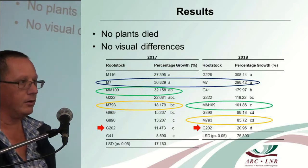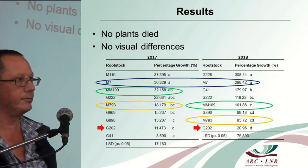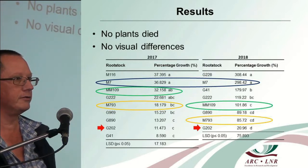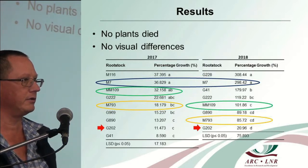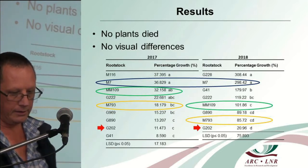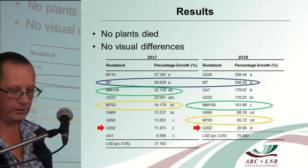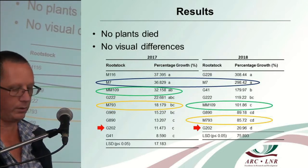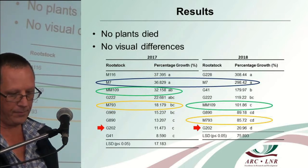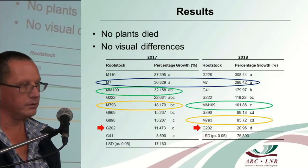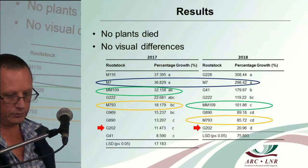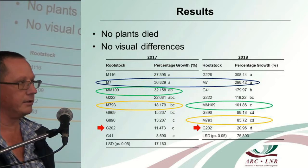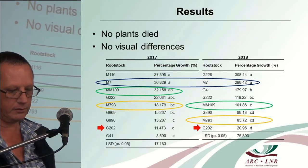The results: no plants died in any of the Phytophthora-infected rootstocks. There were no visual differences in growth observed during the trial. Some interesting trends were observed across the 2017–2018 trials: rootstock M17 performed quite well on the percentage of growth, and MM109 also did quite well. G202 performed poorly in both seasons, and G41 performed poorly in one season but quite well in the other.